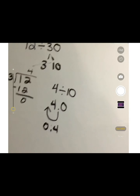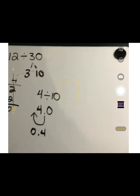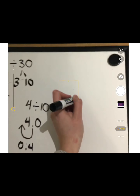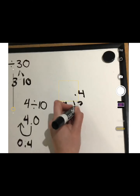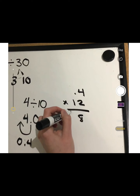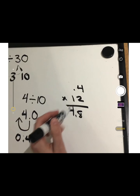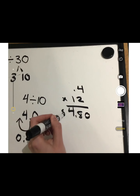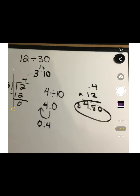But now we're not done with this problem because what this problem is asking is the cost of 12 tokens. So now we need to take 4 tenths and multiply that by 12 to get $4.80. That would be the answer to this problem.